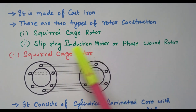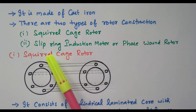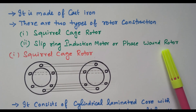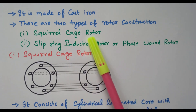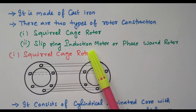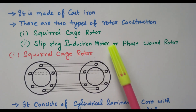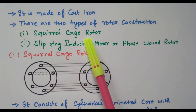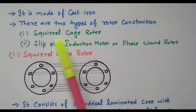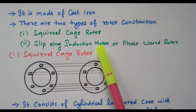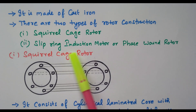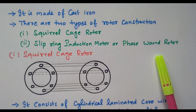There are two types of rotor construction available. One is the squirrel cage rotor, and the other is the slip ring induction motor, also called the phase wound rotor. In the squirrel cage rotor, copper bars are available. In the slip ring type, a separate winding is available — that is the major difference. The copper bars in the squirrel cage rotor are permanently placed and cannot be modified, whereas the slip ring winding can be altered.